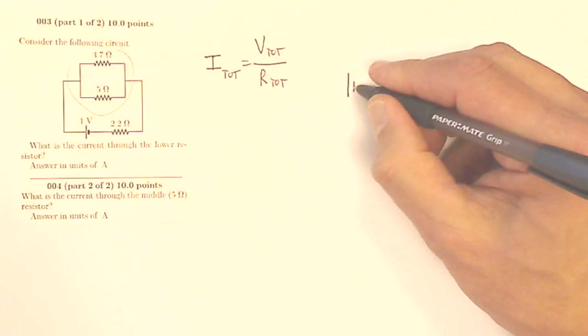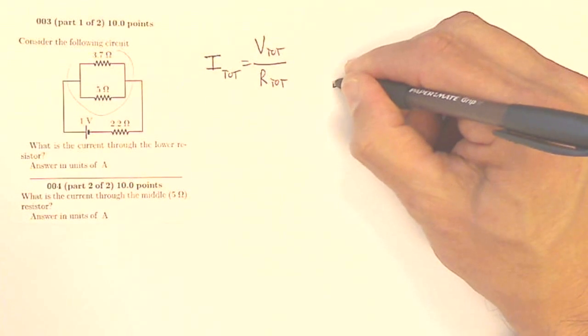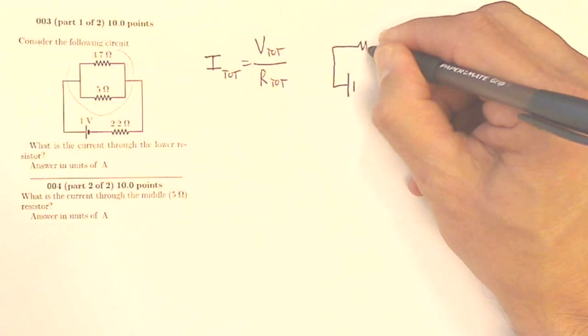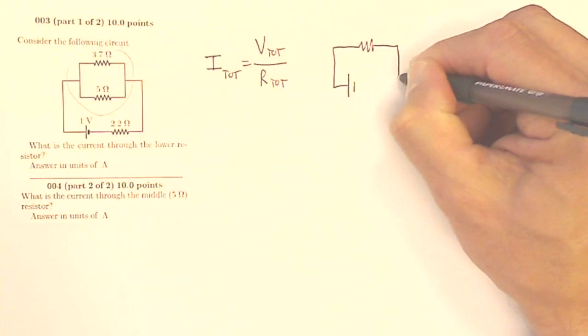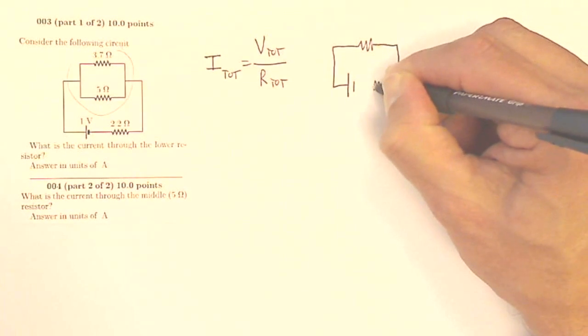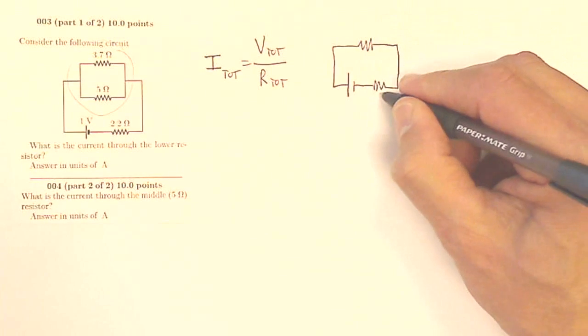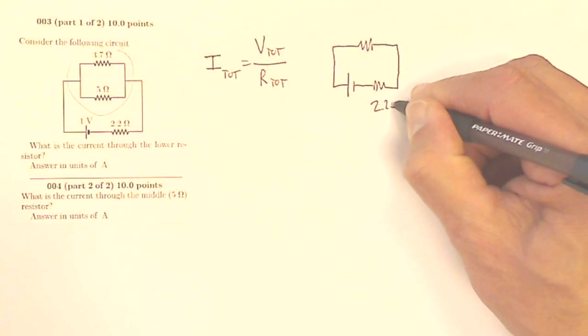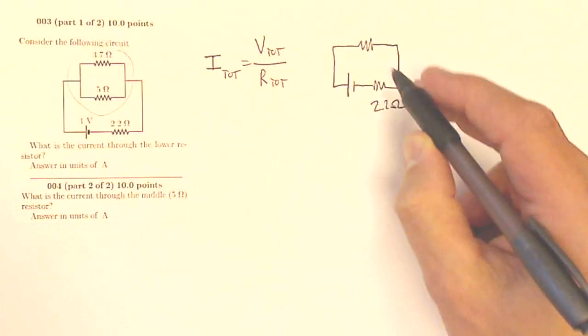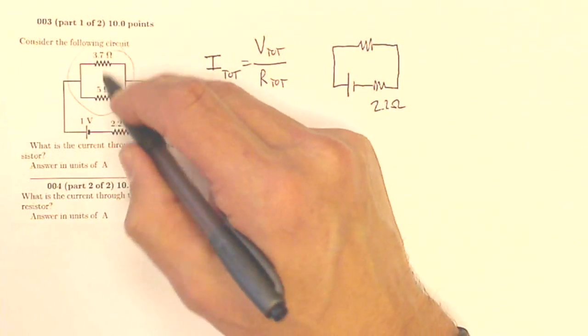So what I can do is combine these two resistors as a single resistor and redraw my circuit. So I'll still have my voltage source of one volt. But now I'm going to have a single resistor up here. And then I'm going to have a single resistor down here. To get this resistor, well, this one is going to be my 2.2 ohms. This one hasn't changed.